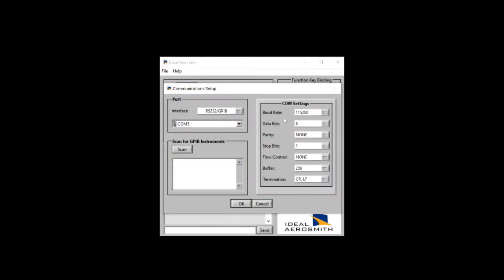Select the COM port that we are using. For the COM settings, we'll make sure that we are at 115.2 baud rate, eight data bits, no parity, stop bits of one, flow control none, buffer 256, termination carriage return and line feed. We'll click OK.